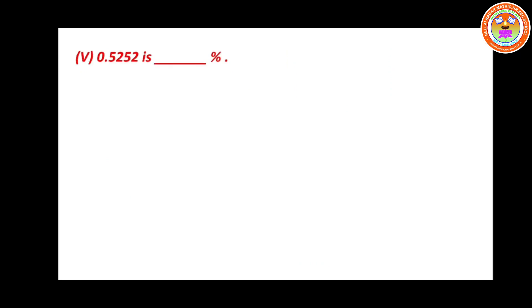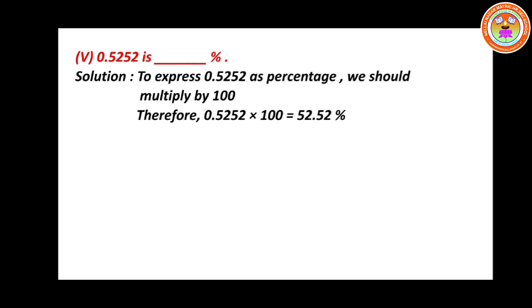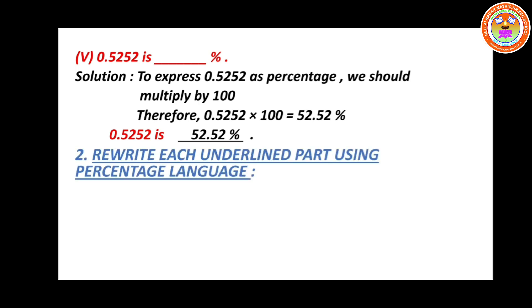Subdivision 5: 0.5252 is blank percent. To express 0.5252 as a percentage, multiply by 100. So 0.5252 into 100 equals 52.52%. Therefore, 0.5252 is 52.52%.